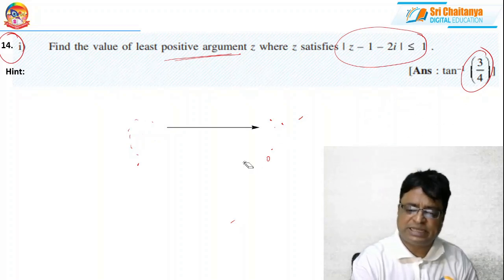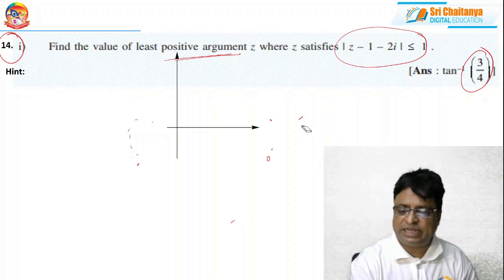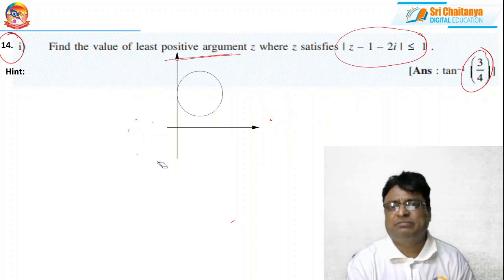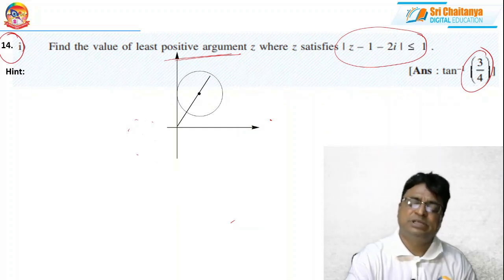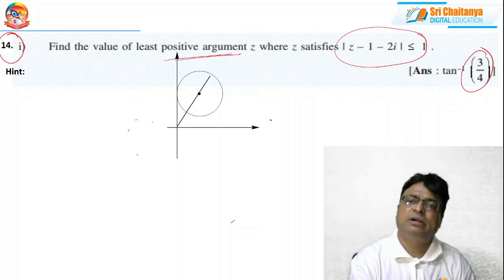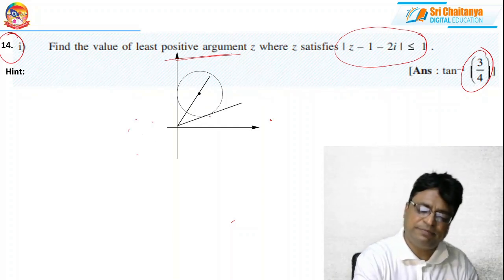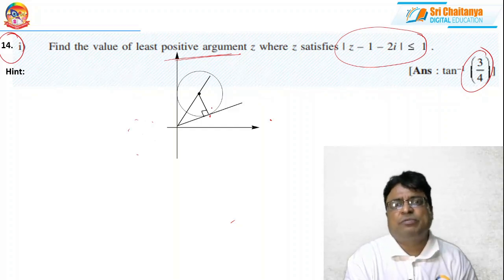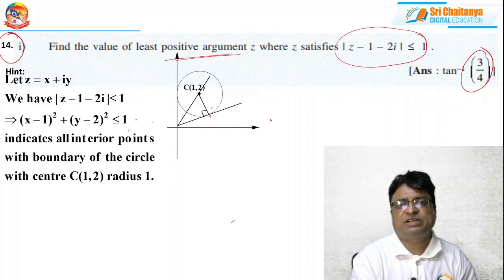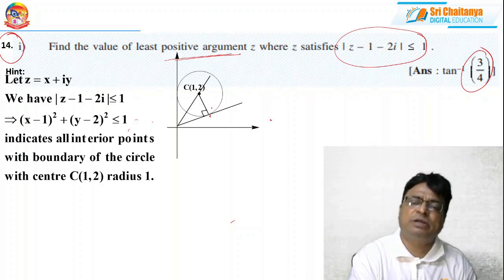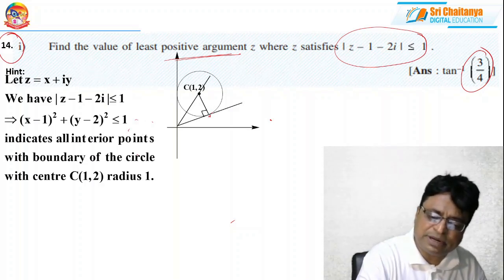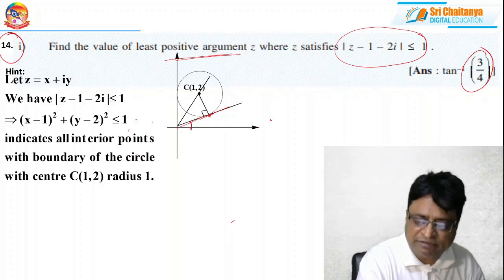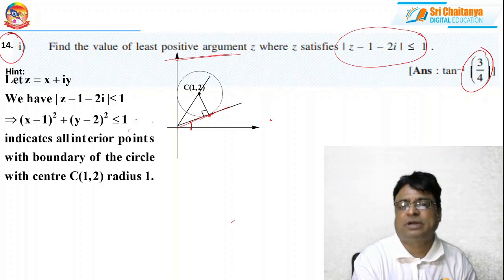Drawing x-axis and y-axis: here is my circle with center C, and this is the tangent from the origin O touching the circle at point P. This complex number at P has the least positive argument. I want to find this angle theta = angle XOP.